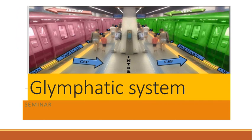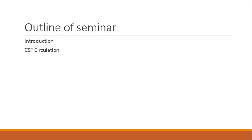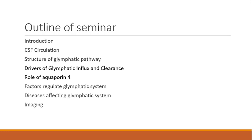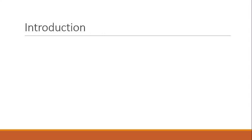Hello friends, welcome back to the channel. Today we will read something about the glymphatic system, which is a waste clearance pathway of the CNS. In this seminar we will cover: CSF circulation and structure of the glymphatic pathway, drivers of glymphatic influx and clearance, the role of aquaporin-4, factors which regulate the glymphatic system, diseases which affect the glymphatic system, imaging, and future perspectives.